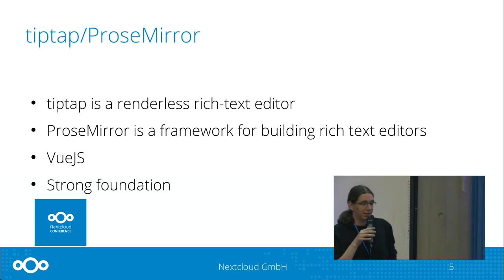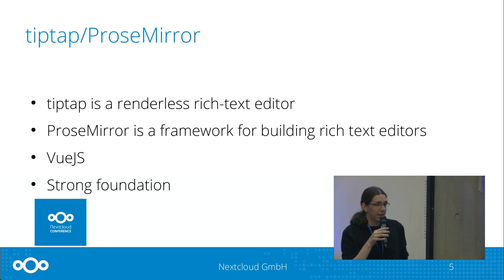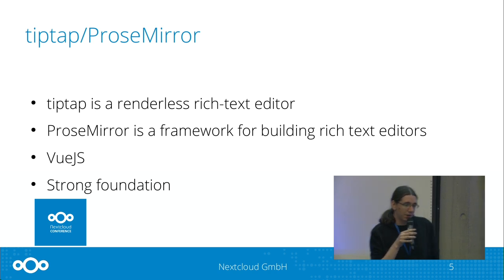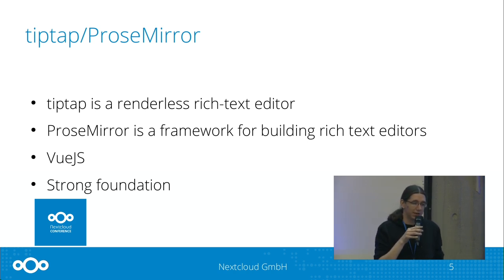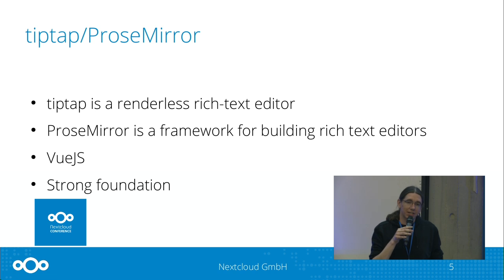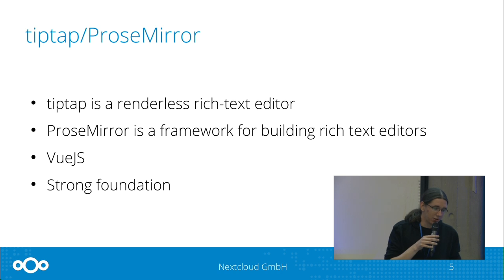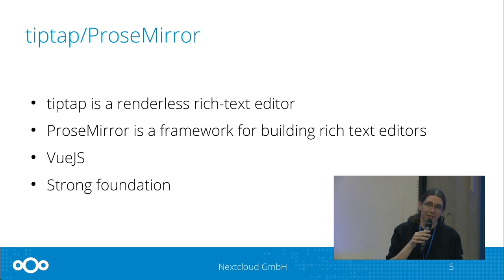We didn't start writing from scratch — we based the code on two libraries. One is Tiptap, and Tiptap uses ProseMirror. ProseMirror is a framework for building rich text editors in JavaScript. It comes with a nice feature set; all the collaboration features come with ProseMirror so we don't need to do much implementation on the client side. It's also used by several other companies like GitLab and Atlassian.